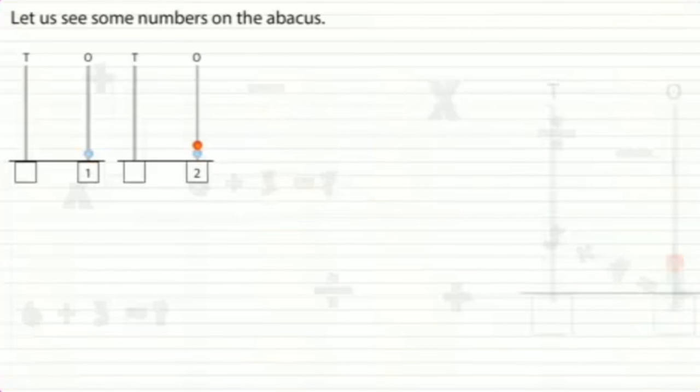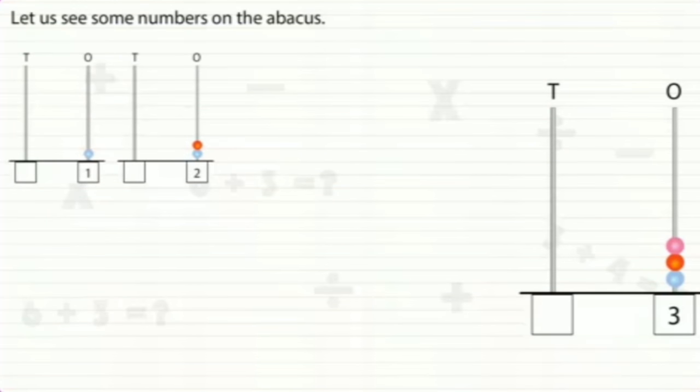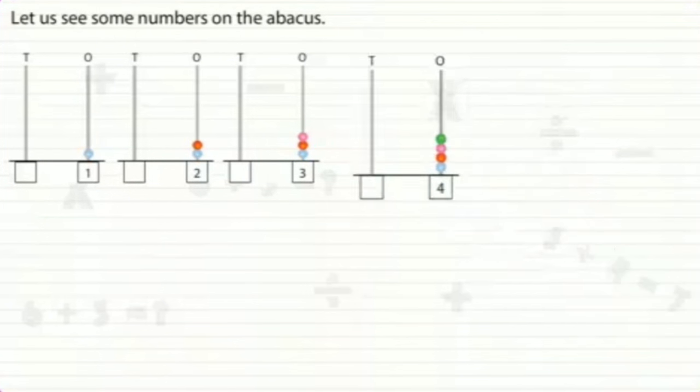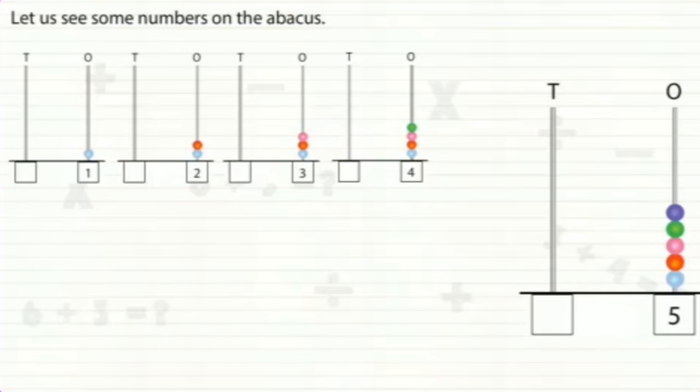For 3, we put 3 beads in the ones spike. For 4, we put 4 beads in the ones spike. For 5, we put 5 beads in the ones spike.